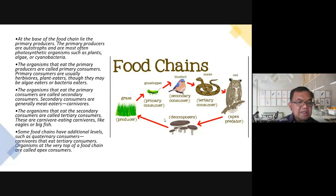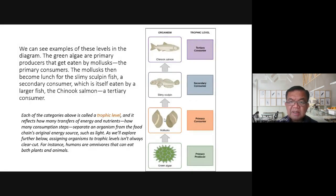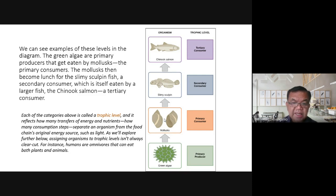Organisms that eat secondary consumers are called tertiary consumers — these are carnivores eating meat, like eagles or big fish. Looking at a diagram example: green algae are the primary producers; mollusks are the primary consumers; slimy sculpin — a type of fish — eats the mollusks and becomes the secondary consumer; and the chinook salmon eating the slimy sculpin becomes the tertiary consumer. These are called trophic levels.